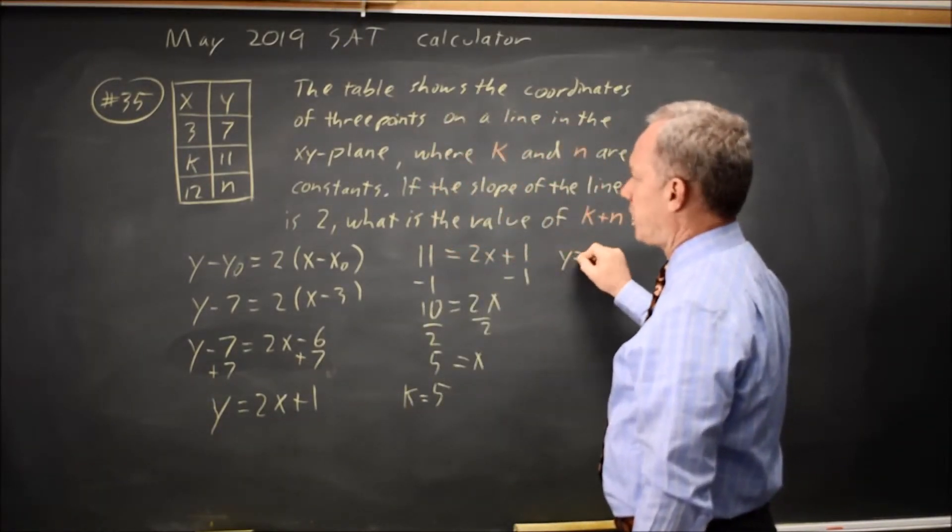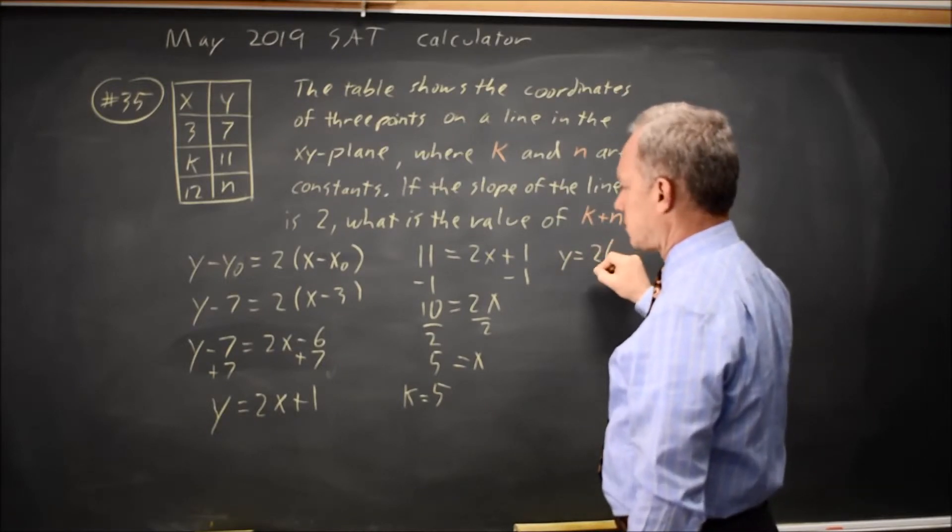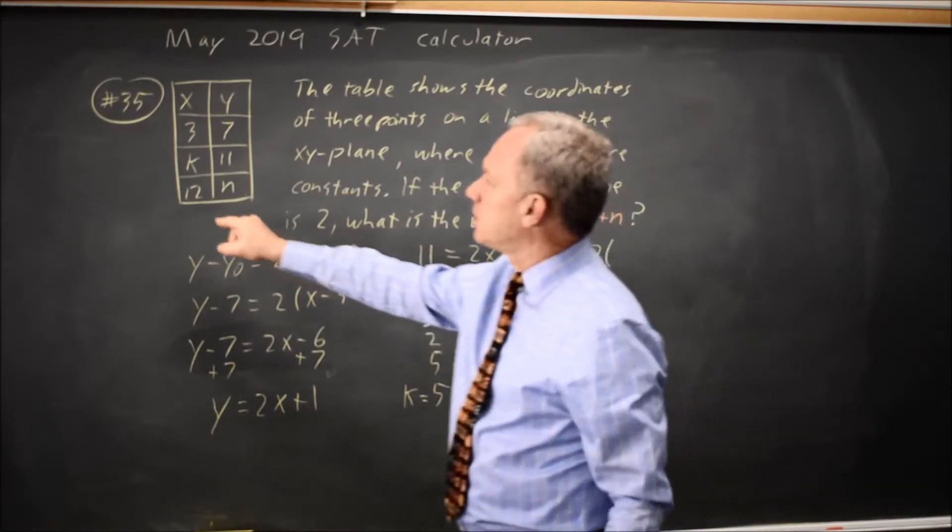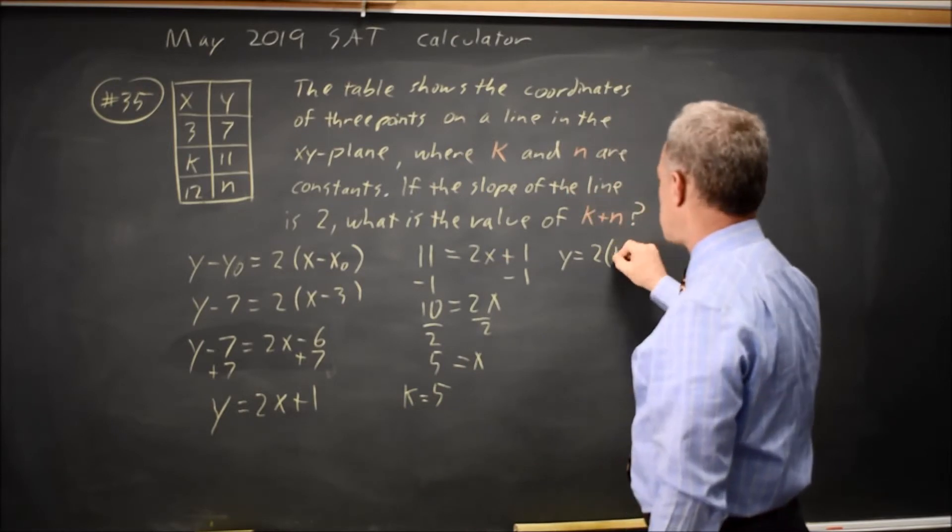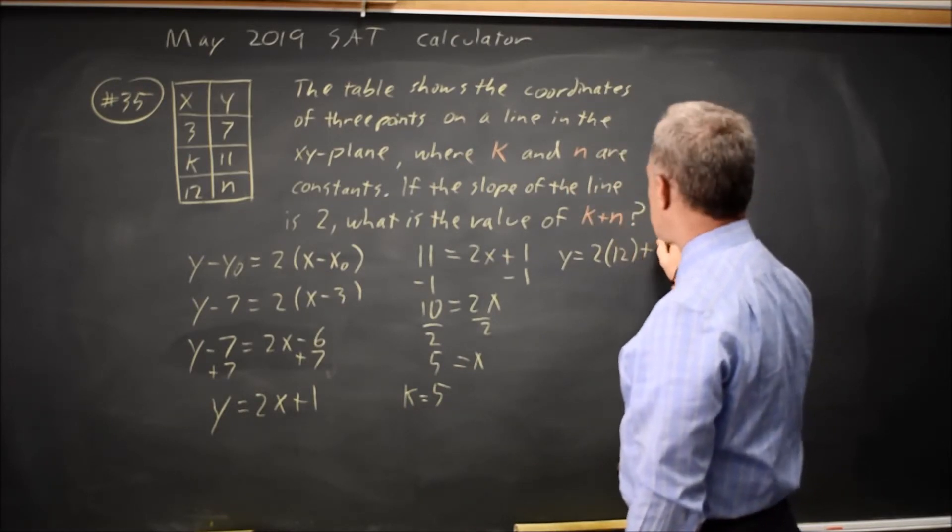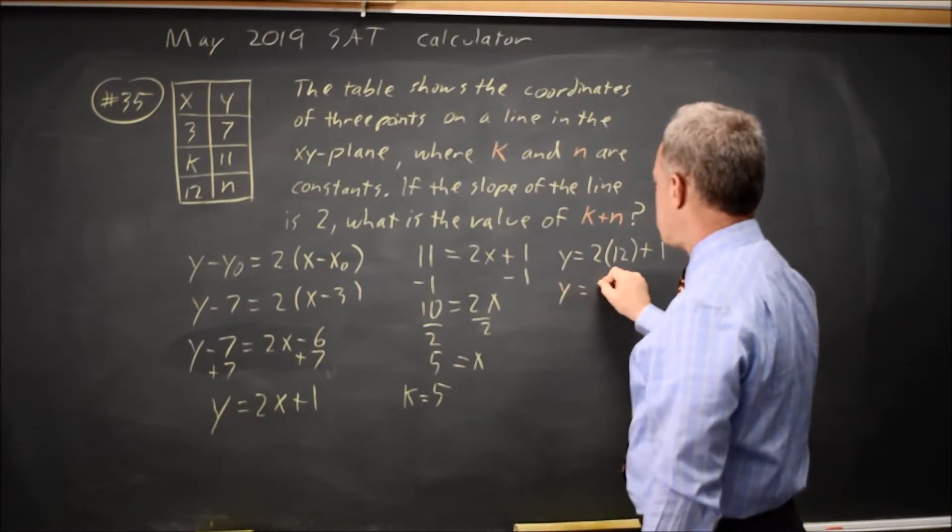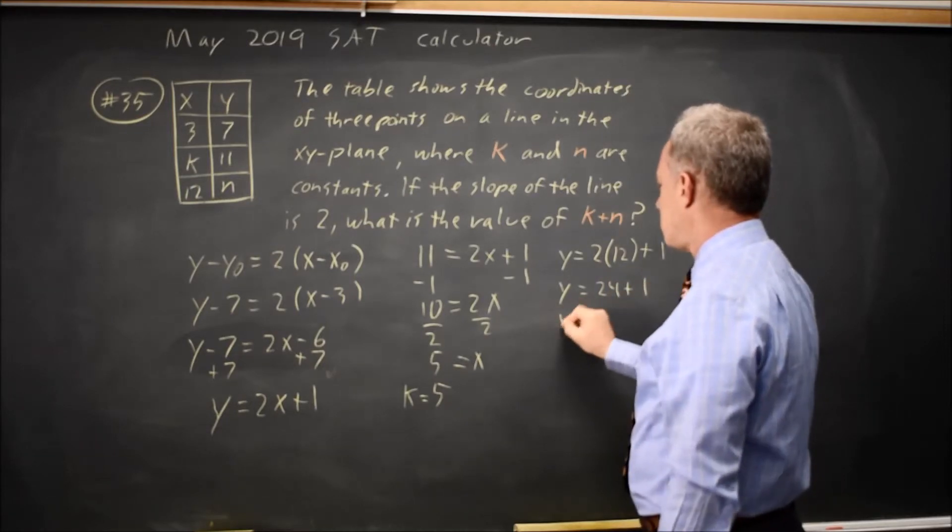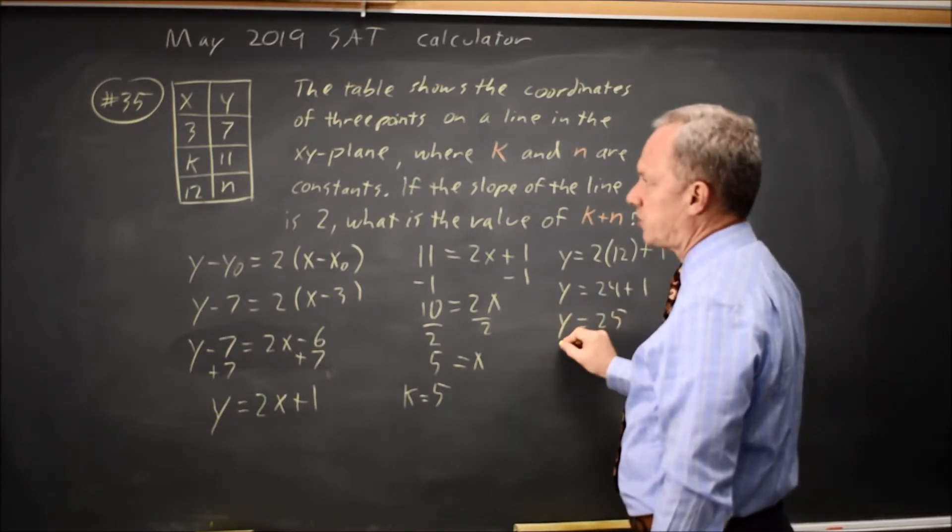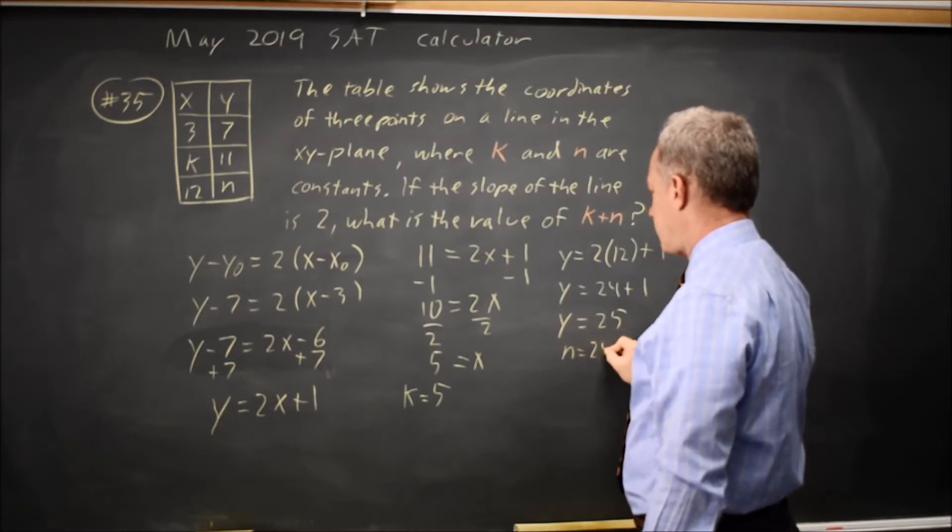And when x equals 12, twice 12 plus 1. The y value is 24 plus 1. The y value is 25 when x is 12, and that's n equals 25.